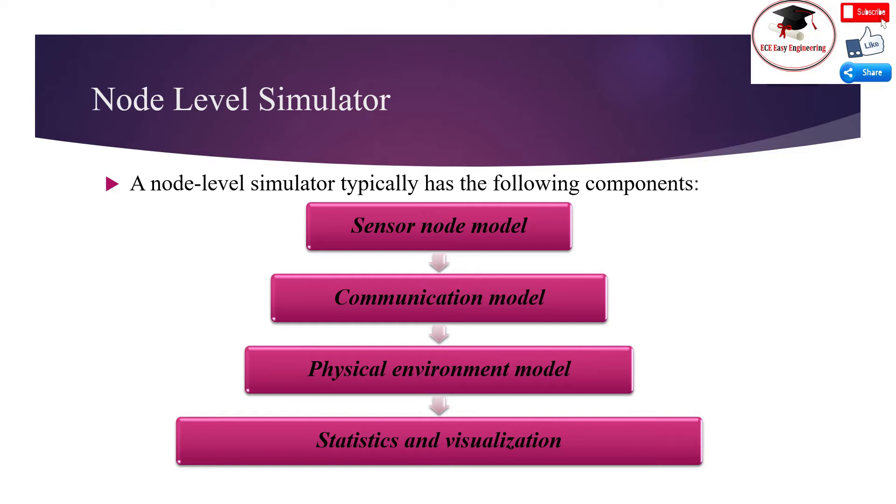Statistics and visualization. The simulation results need to be collected for analysis since the goal of simulation is typically to derive global properties from the execution of individual nodes. Visualizing global behavior is extremely important. An ideal visualization tool should also be used to easily observe on demand the spatial distribution and mobility of the nodes, the connectivity among the nodes, link qualities, end-to-end connection, routes and delays, phenomena and their spatial-temporal dynamic, sensor reading on each node, sensor node states, and node lifetimes, for example, battery power.